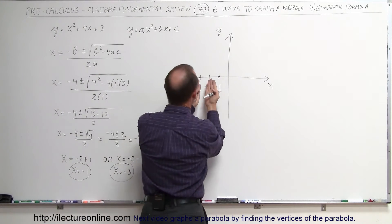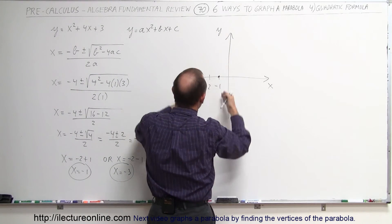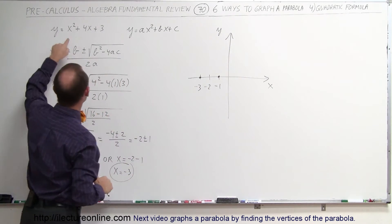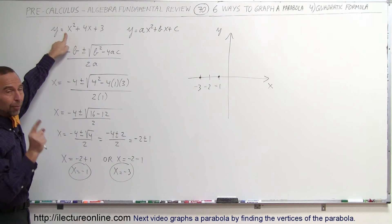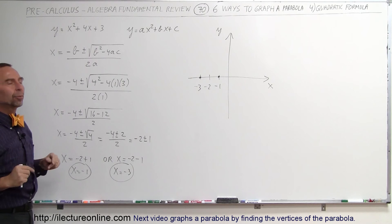Now that means that either the parabola opens upward like this or opens downward like this. Looking at the equation, knowing that the coefficient of the x-squared term, a, is a positive number, that means it opens upward.